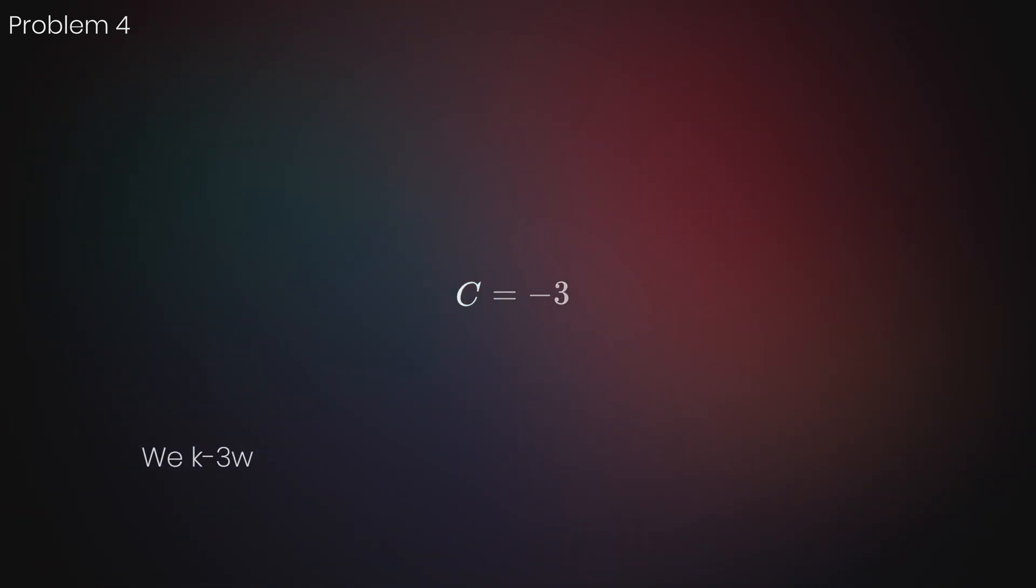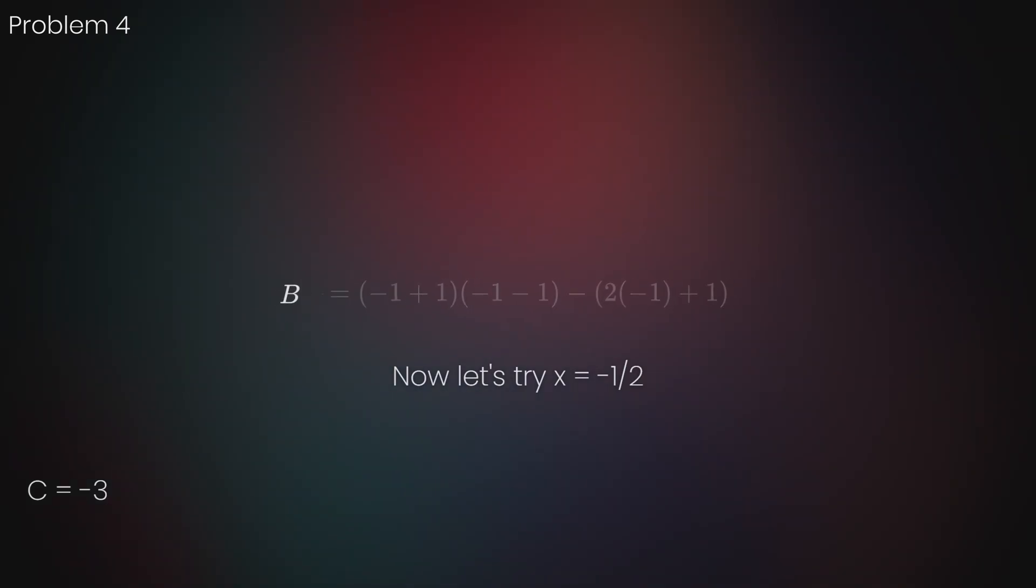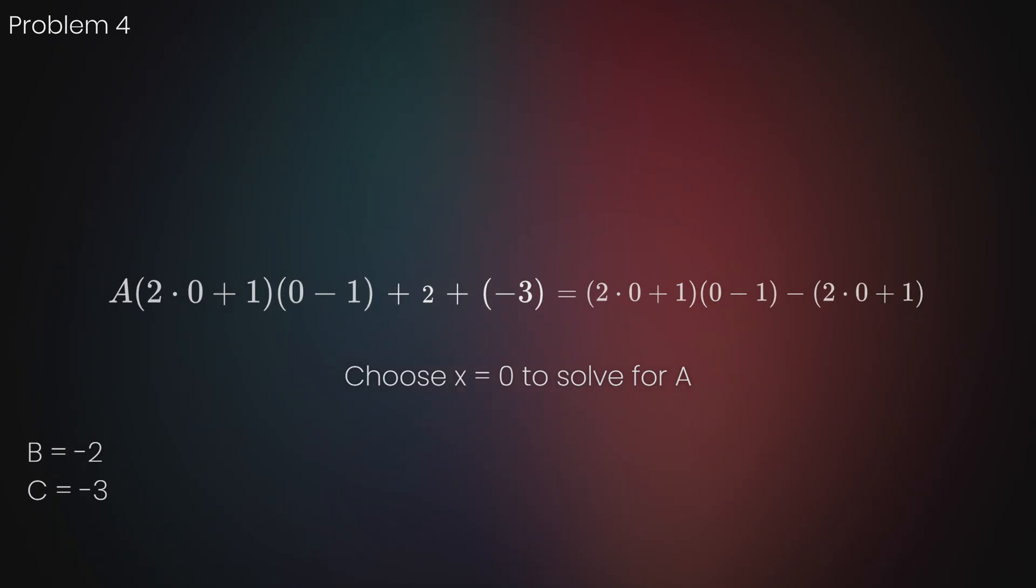Using a similar strategy, we can substitute x equals negative a half to eliminate just a and get b equals negative 2. Finally, we can pick any value of x we want to solve for a alone.